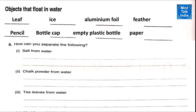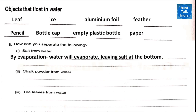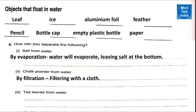How can you separate the following things? Salt from water: by evaporation. If we boil a solution of salt and water, the water will evaporate and the salt will be left at the bottom. This is how salt is prepared by evaporating sea water. How will we separate chalk powder from water? We will use the filtration method and filter it with a cloth. How will we separate tea leaves from water? We will use filtration and the tool we use is called a sieve.